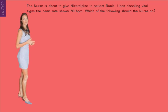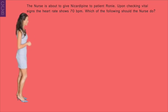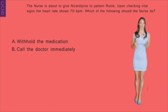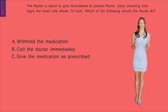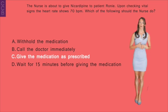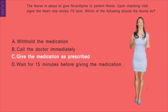Question 2: The nurse is about to give nicardipine to patient Ronnie. Upon checking vital signs, the heart rate shows 70 beats per minute. Which of the following should the nurse do? A) Withhold the medication, B) Call the doctor immediately, C) Give the medication as prescribed, or D) Wait 15 minutes before giving the medication. Calcium channel blockers should be withheld if the heart rate is below 50 to 60 beats per minute depending on the hospital's protocol. Since the patient's heart rate is within normal range, the medication can be given as ordered — option C.